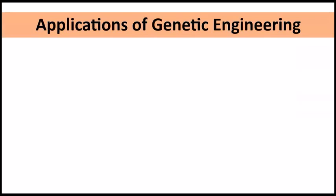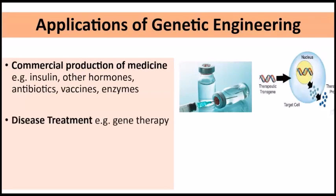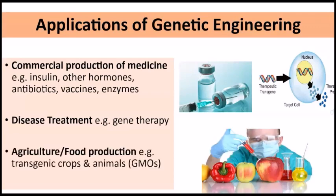Now that we have a basic understanding of how genetic engineering works, let's look at some of its applications. Common applications include the commercial production of medicine such as insulin, other hormones, antibiotics, vaccines, and enzymes. Secondly, disease treatment — using gene therapy as another application for treating genetic disorders. And thirdly, agriculture and food production, involving the production of transgenic crops and animals, which are often known as GMOs or genetically modified organisms.